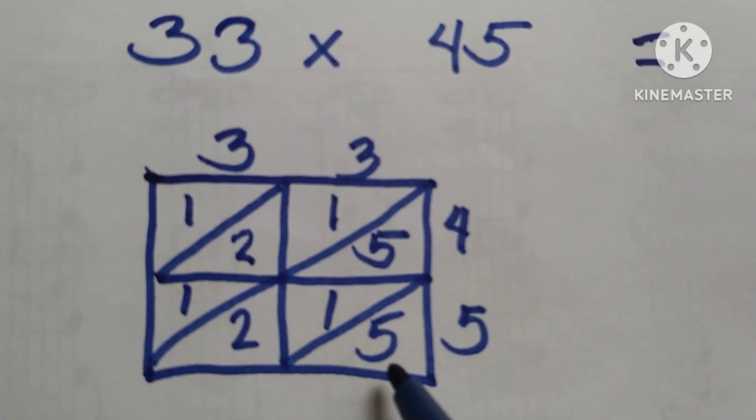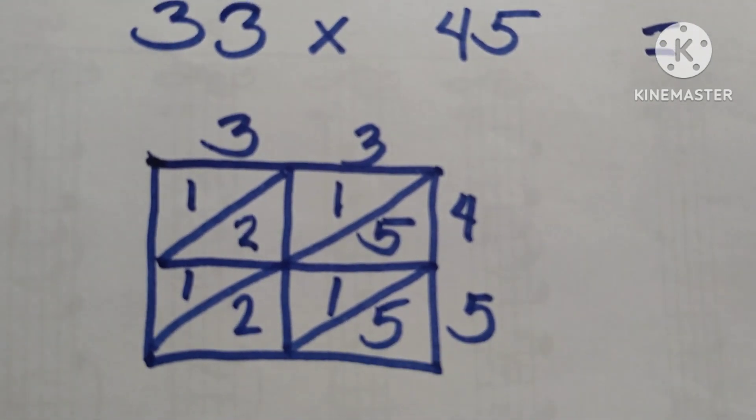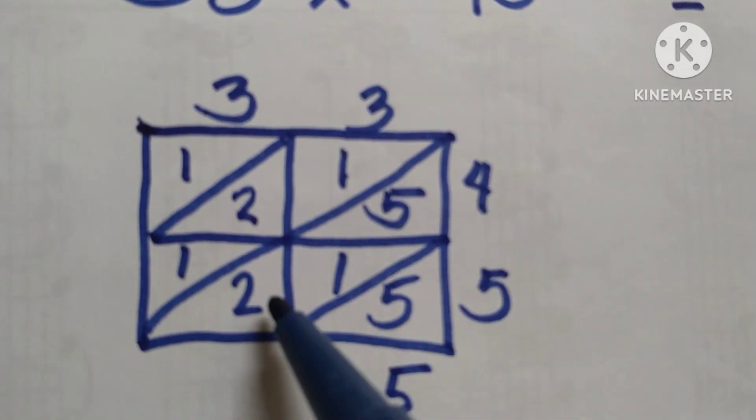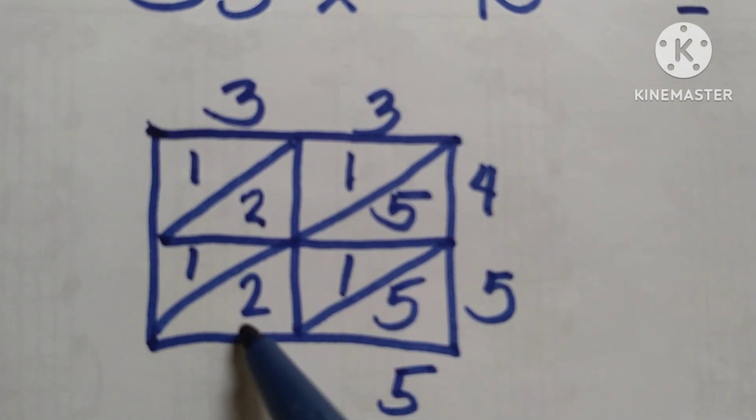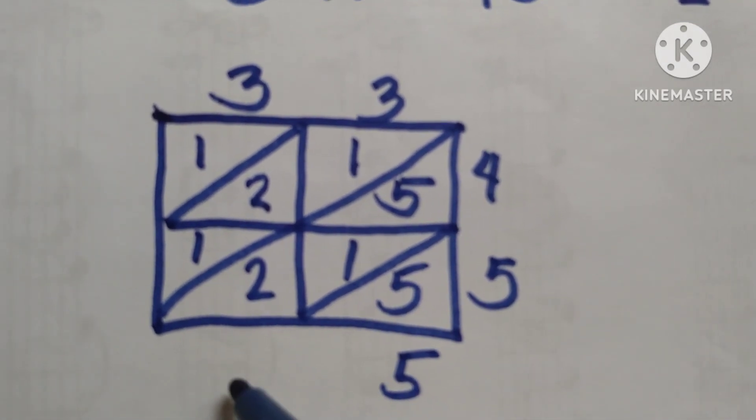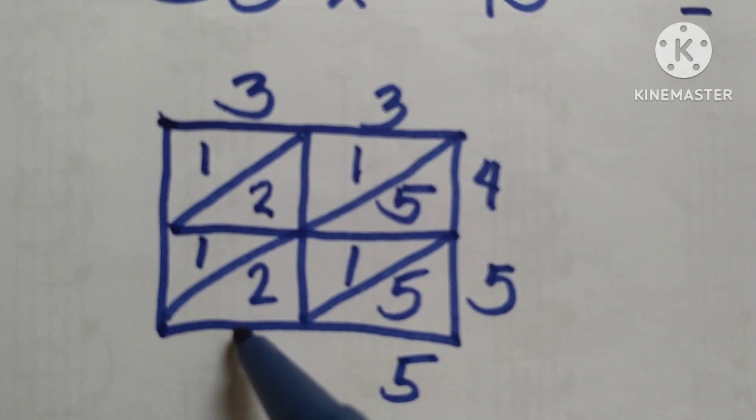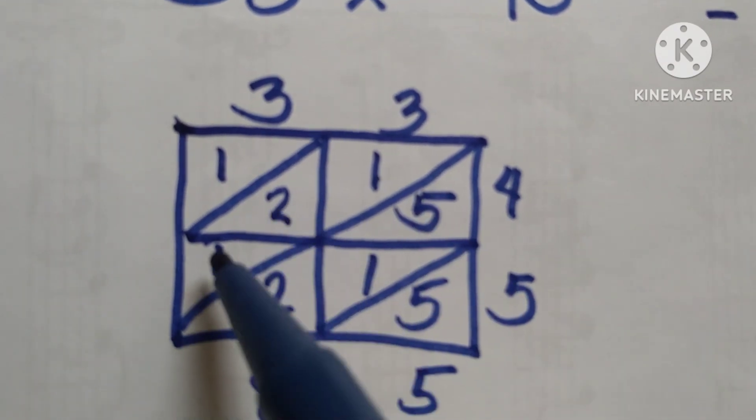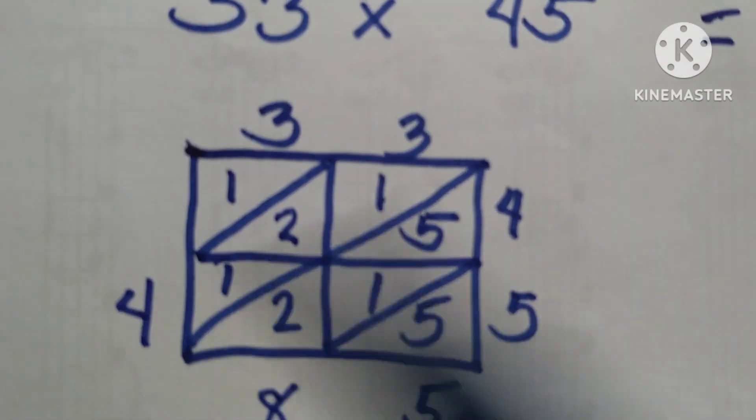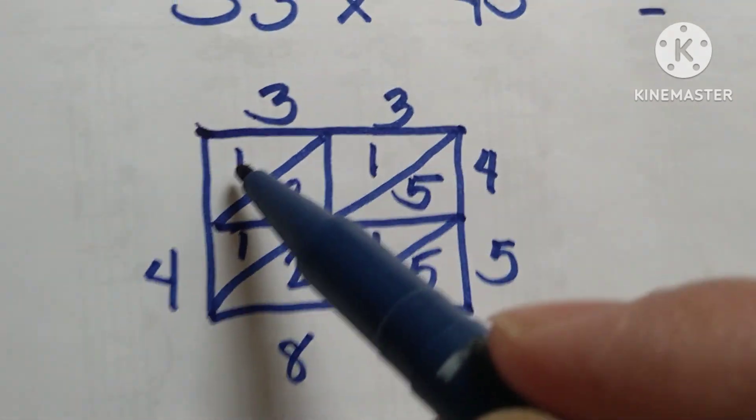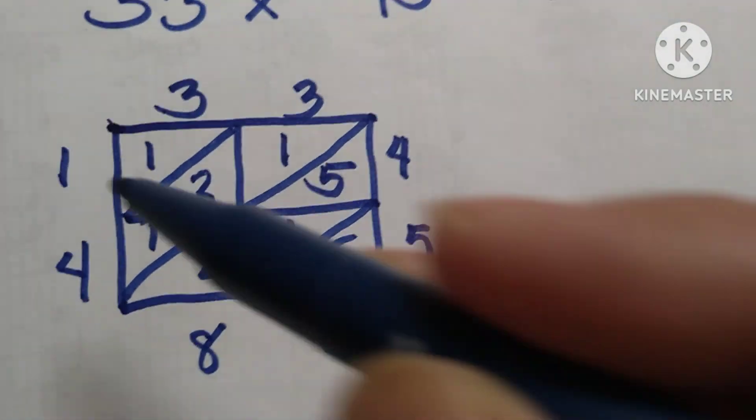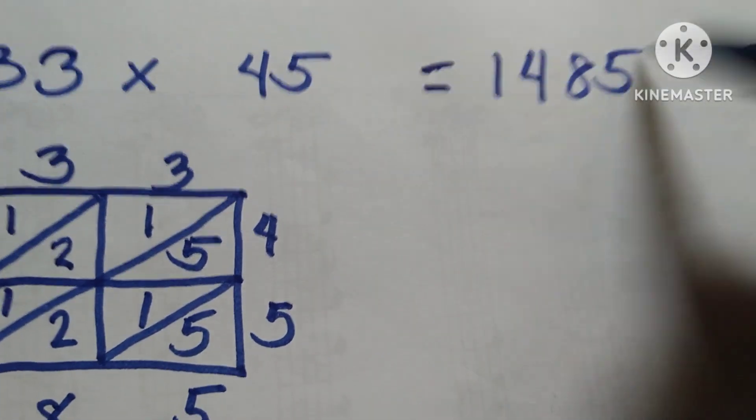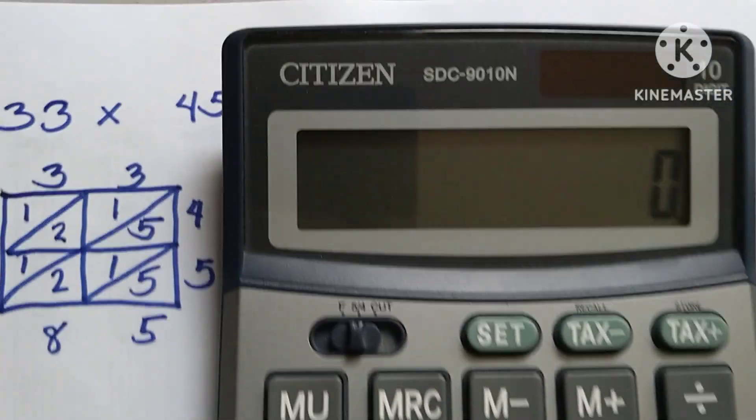Add the numbers. Five—automatically write it down here. This side: five plus one plus two. Eight plus one is five, plus two is seven, plus one is eight.